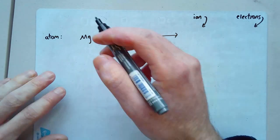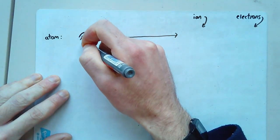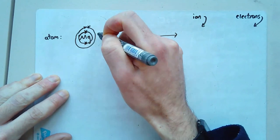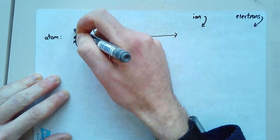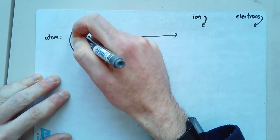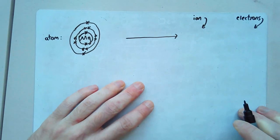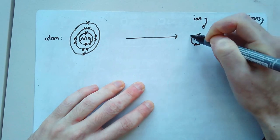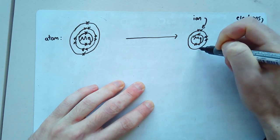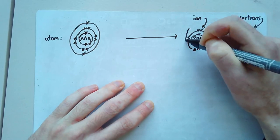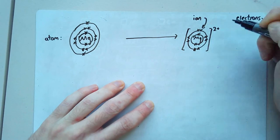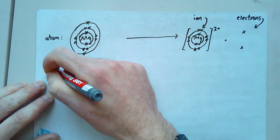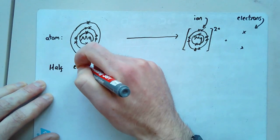So we know that magnesium has one, two electrons in the first shell. One, two, three, four, five, six, seven, eight electrons in the second shell. One, two in the final shell. When it becomes an ion, I'll have Mg like this. Still got the two in the first shell. Still got the eight in the second shell. It's going to have a charge of two plus. And I've lost two electrons. If you've got that right, well done.